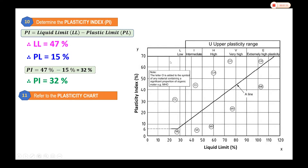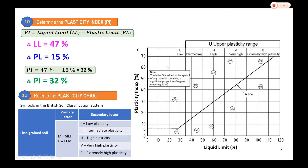We also need to understand the symbols used in this plasticity chart. This chart is for fine-grained soil, and the symbols are based on the British soil classification system — you can refer to the British standard. We have a primary letter indicating the soil type: capital M indicates silt (S-I-L-T), and C is for clay (C-L-A-Y).